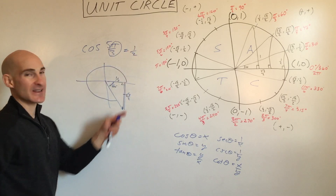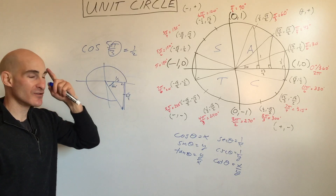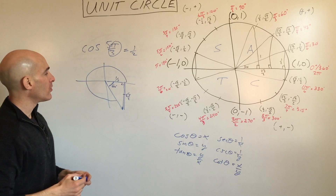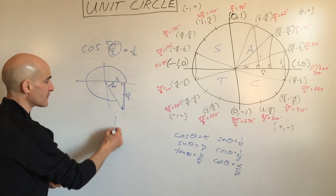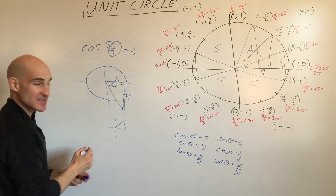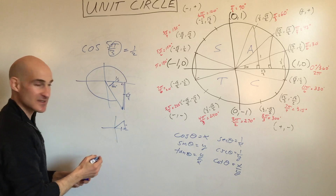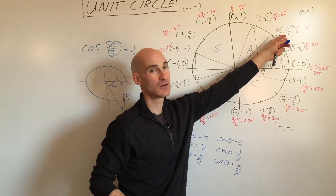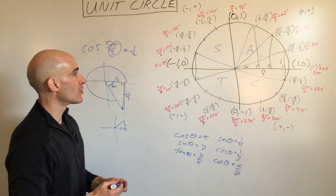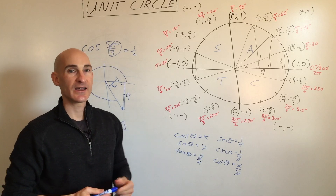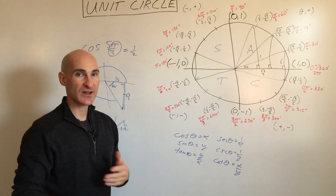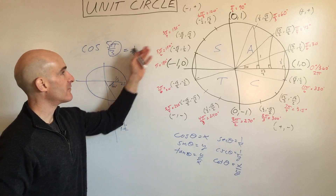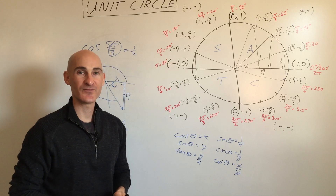This process gets faster with practice — you'll quickly visualize where the point is and know its values. For 45-degree angles, the triangle is isosceles, so both legs are equal: (√2/2, √2/2). Take time to memorize the unit circle; practice drawing it on the side of your page initially. Eventually you'll memorize all the radian measures, degree measures, and coordinates automatically.